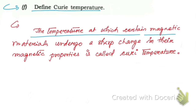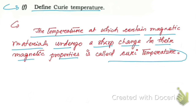Next: the temperature at which certain magnetic materials undergo a sharp change in their magnetic properties is known as the Curie temperature.